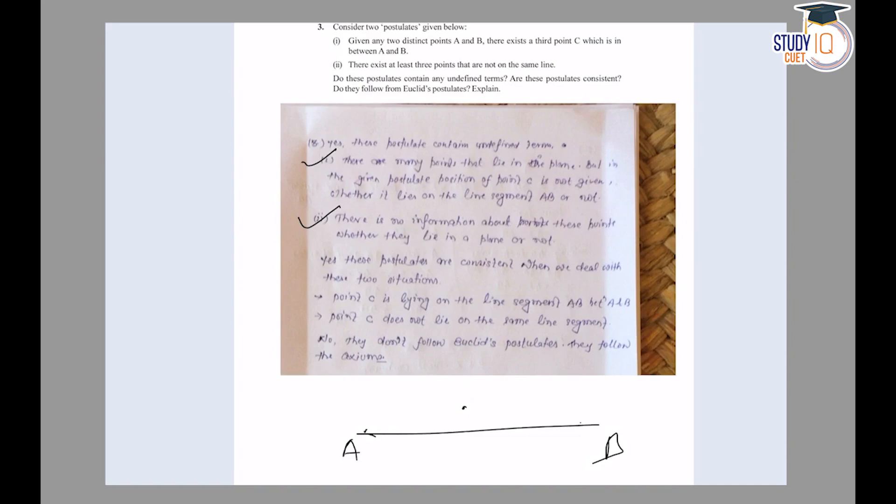If we talk about A and B, here I have two points, A and B. So here I have a line segment. This point C - we can say that this is a point between A and B. In this postulate, I have not mentioned that the point C should be on the line joining A and B.